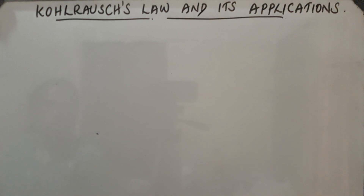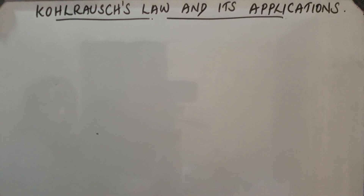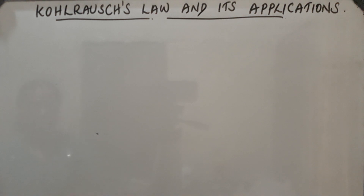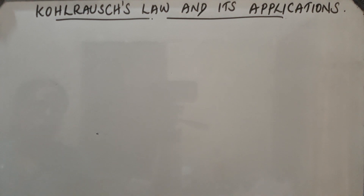Good morning students. Today's topic is Kohlrausch's Law and its applications. Electrolytes are of two types: strong electrolytes and weak electrolytes. Strong electrolytes dissociate completely, so we can easily calculate the limiting molar conductivity of strong electrolytes. But in the case of weak electrolytes, at infinite dilution the molar conductivity can be calculated but it is not accurate. So we use a new method called Kohlrausch's Law.